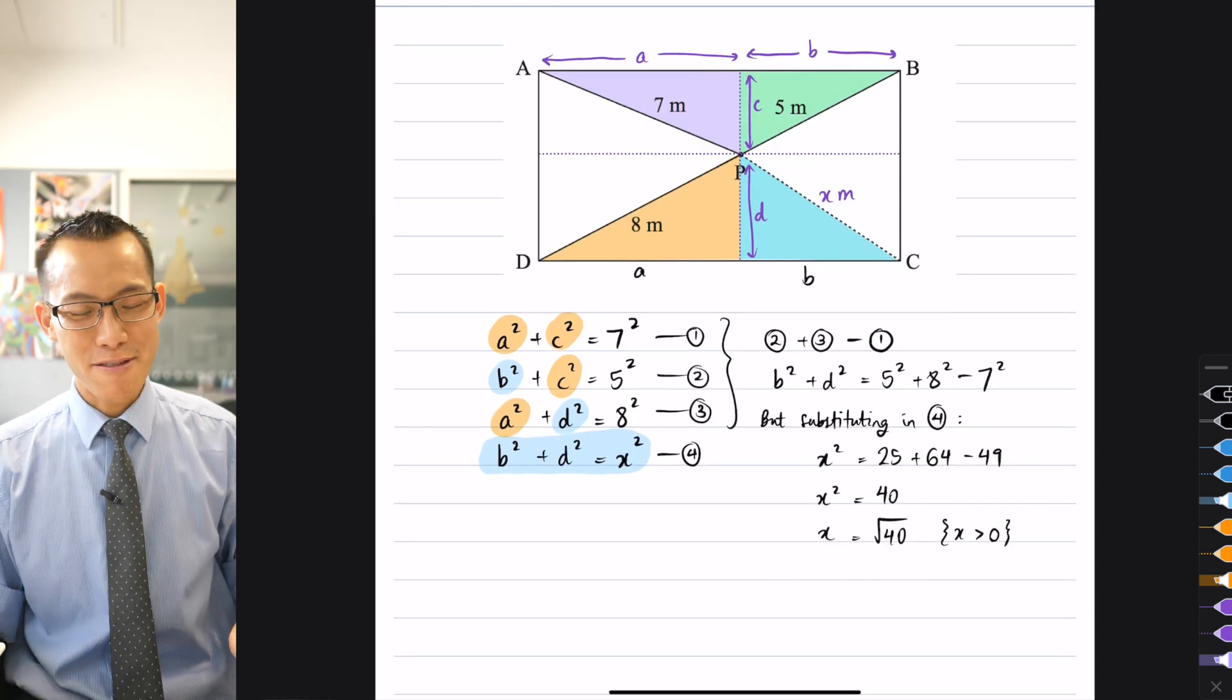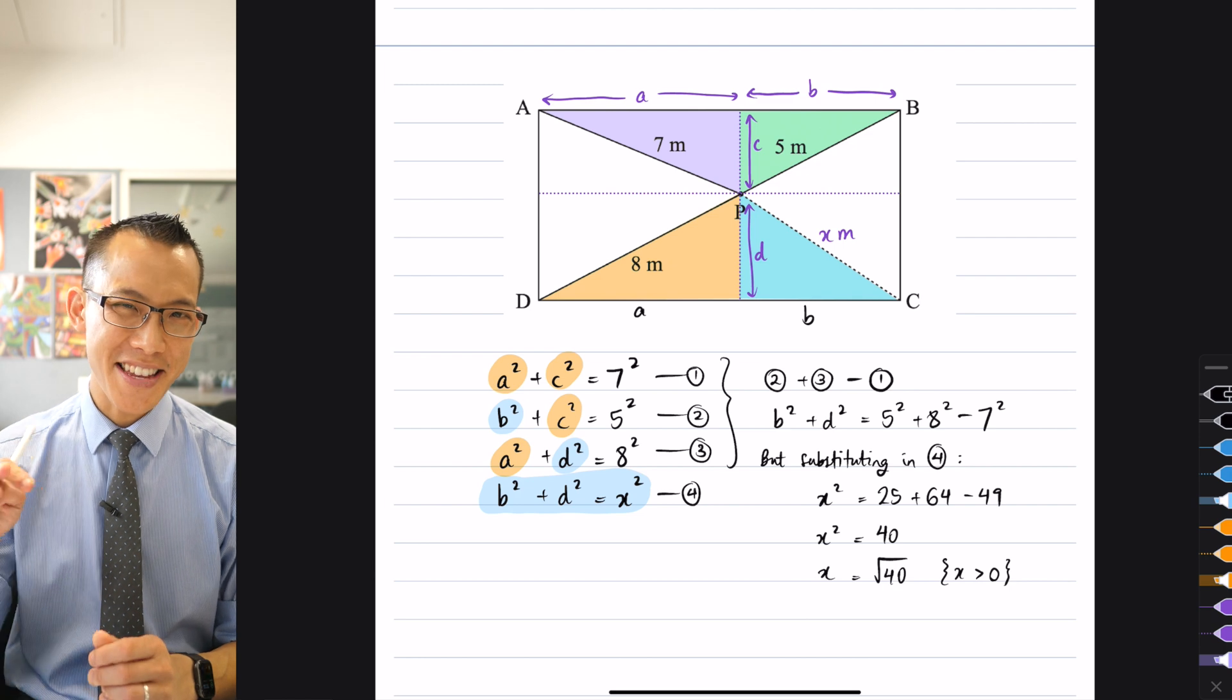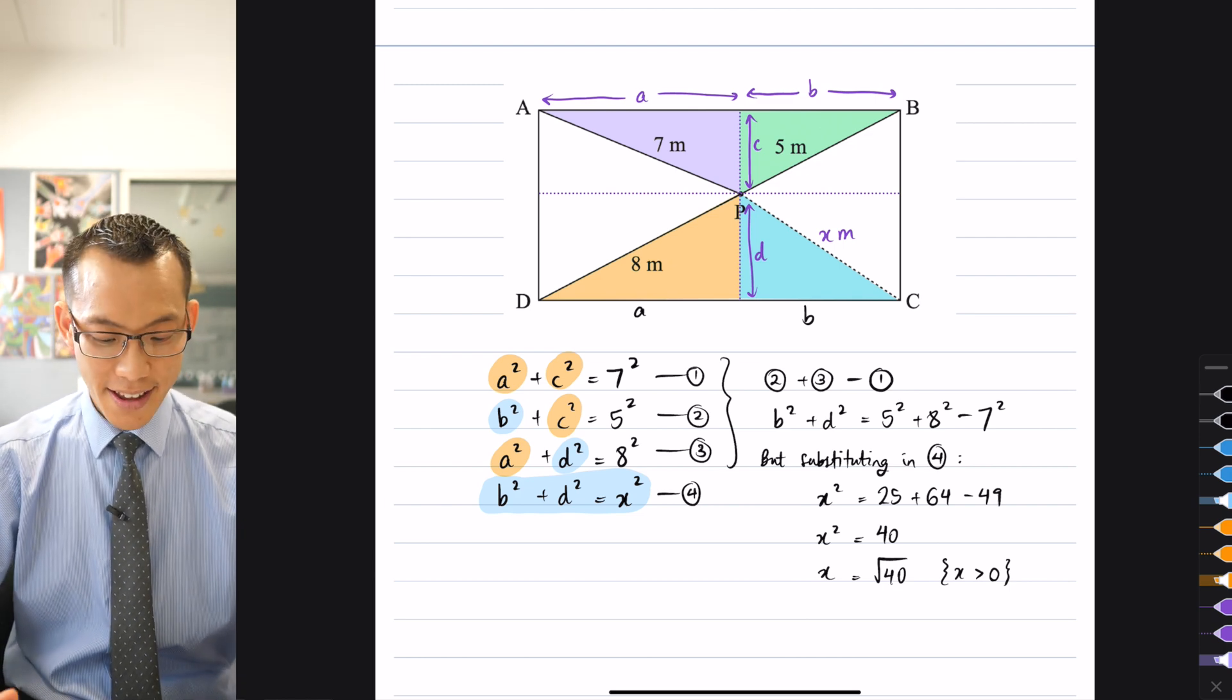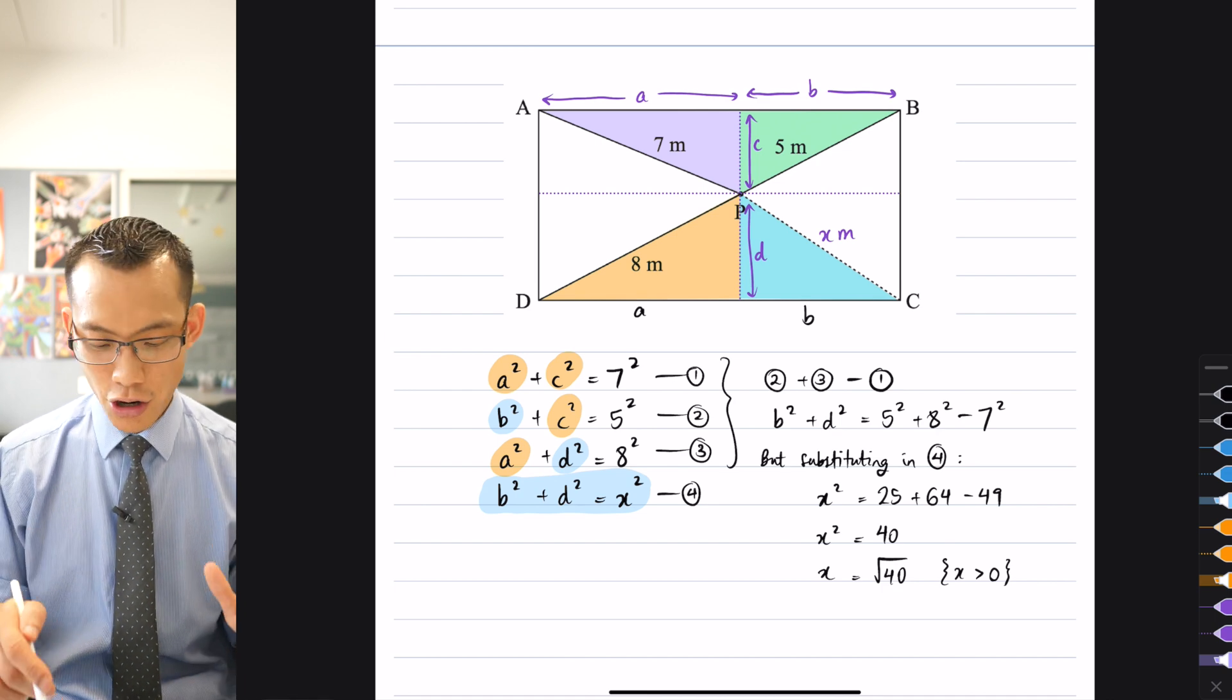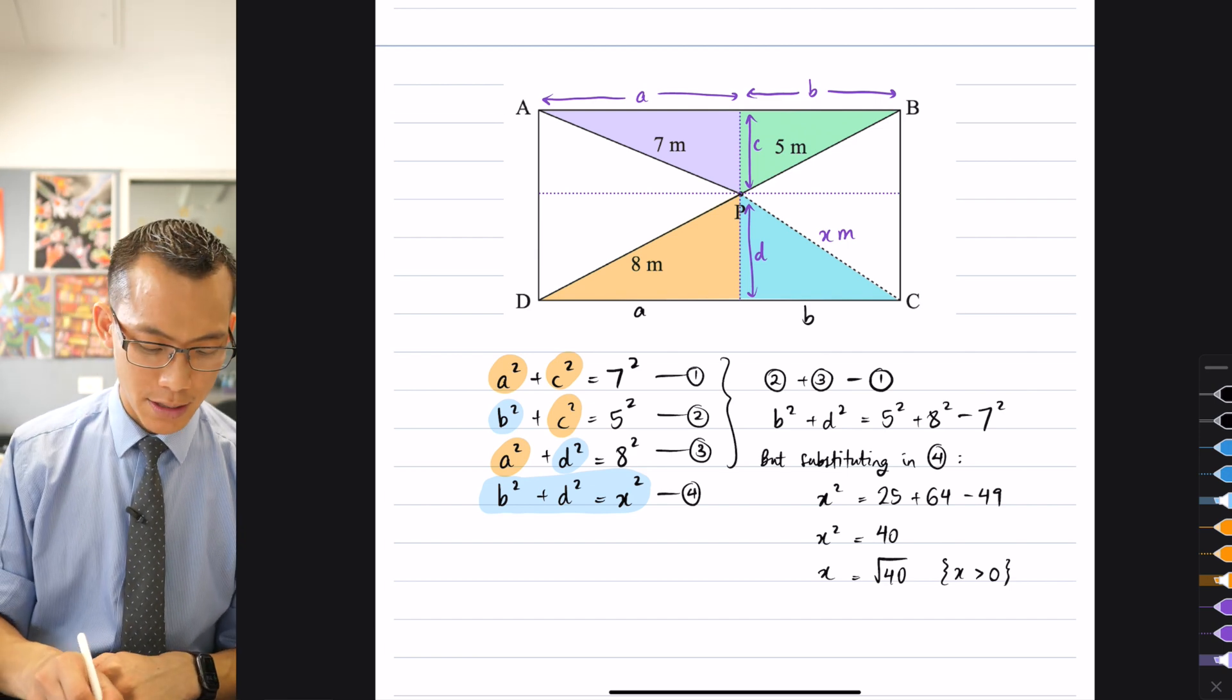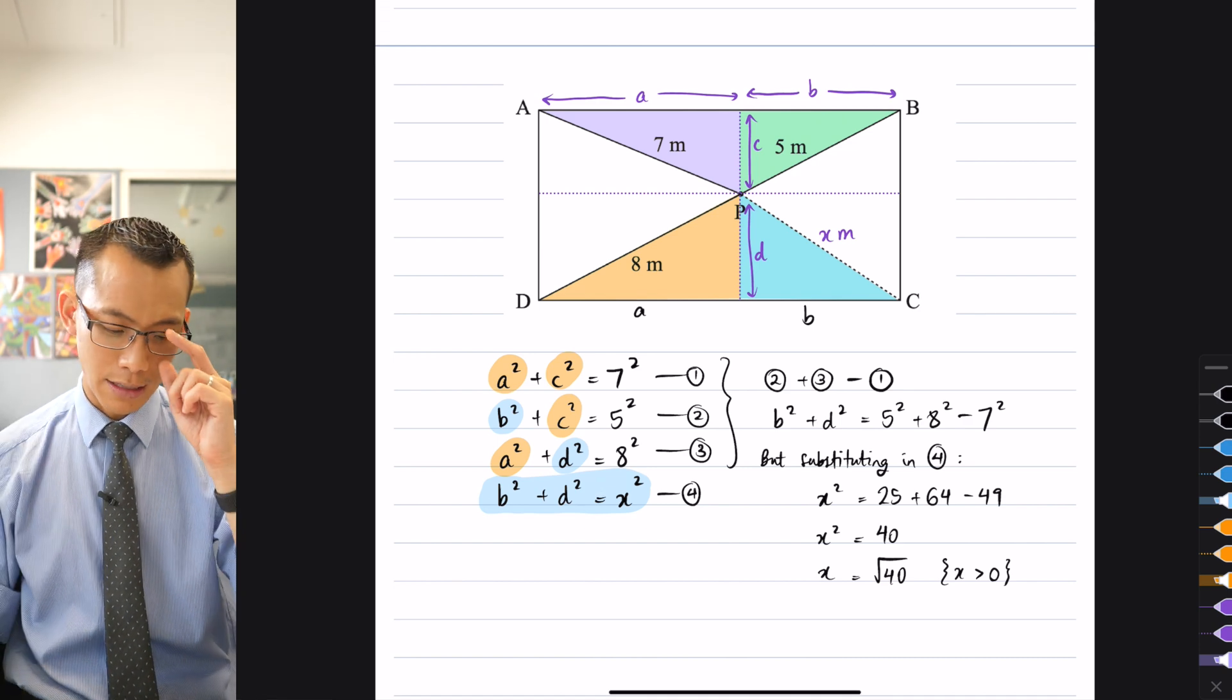So just like with the previous problem, these right angled triangles find a way of sneaking their way into all kinds of geometry problems. What I like about this one is that even though there are so many unknowns, like I never found out what A, B, C, and D were, but I didn't need to because these relationships here from the right angled triangles, I could use to sort of cancel things out.